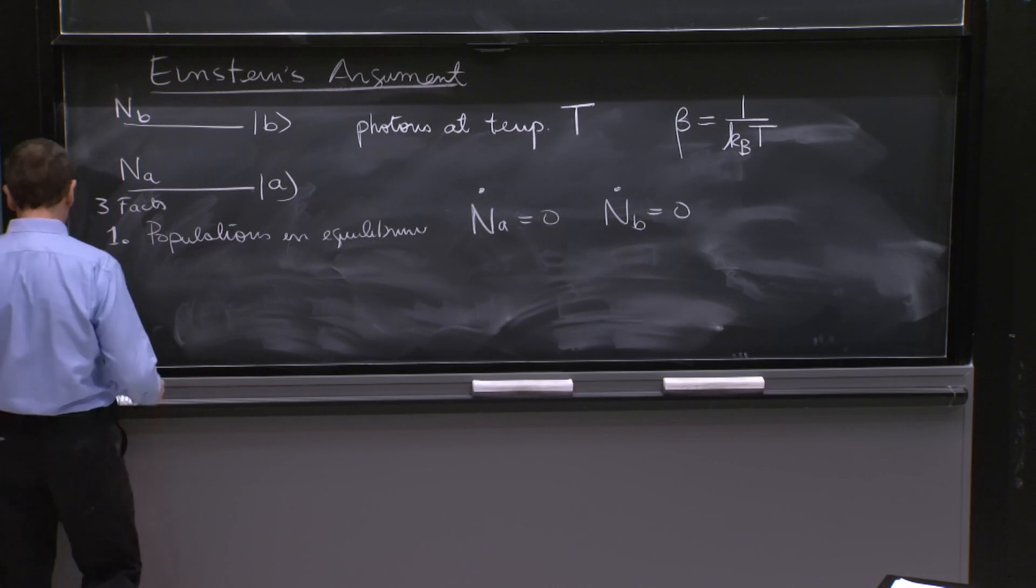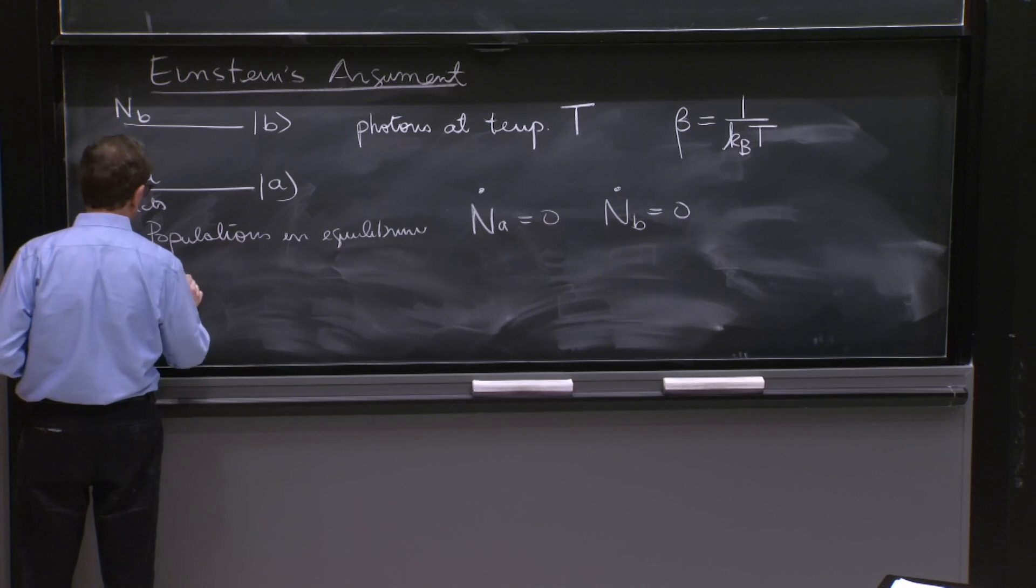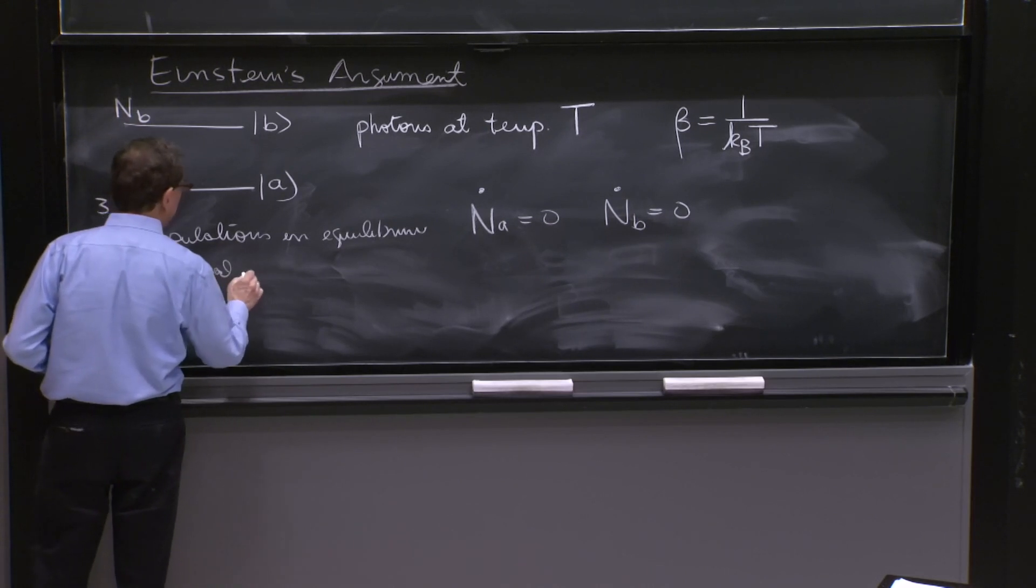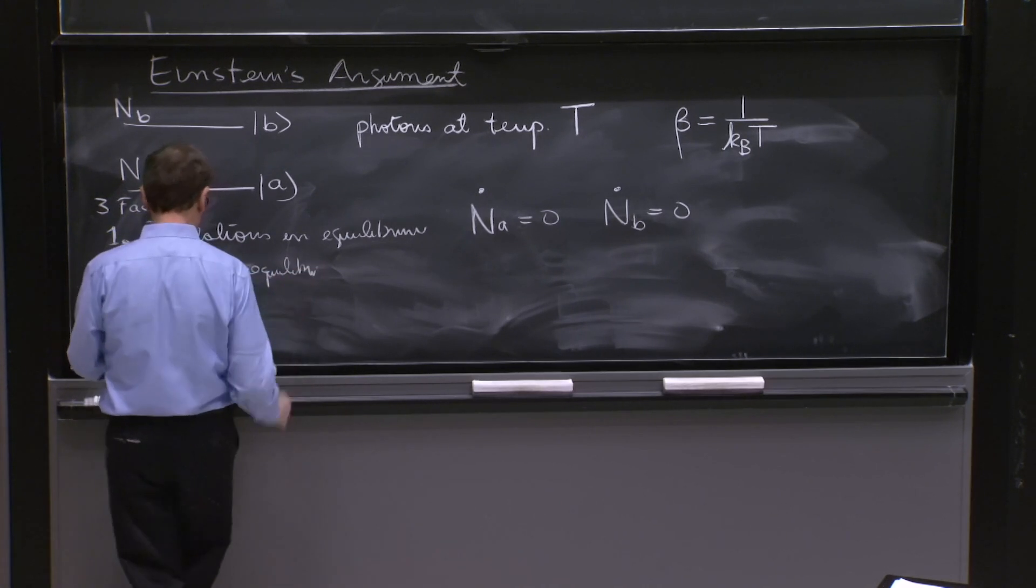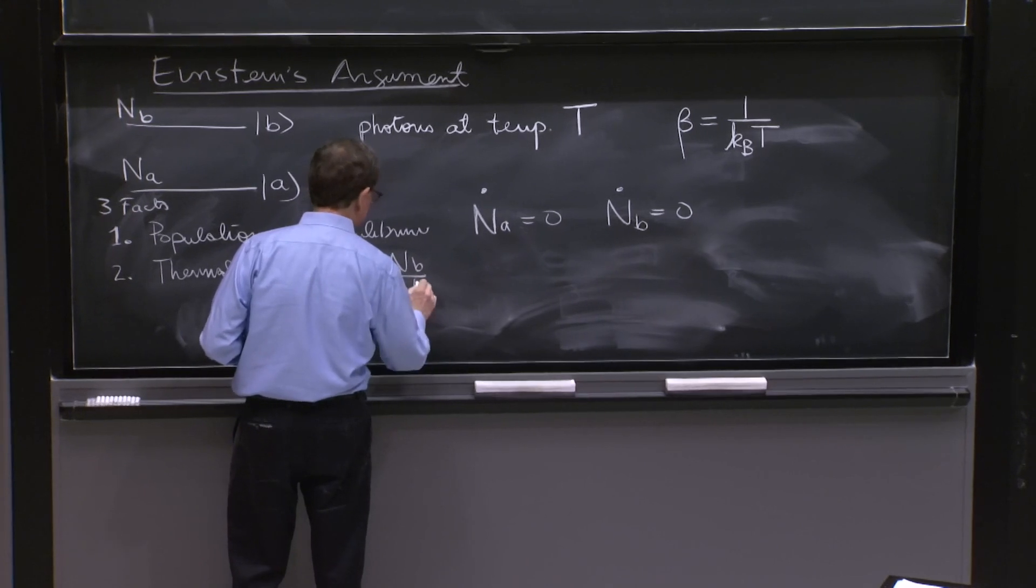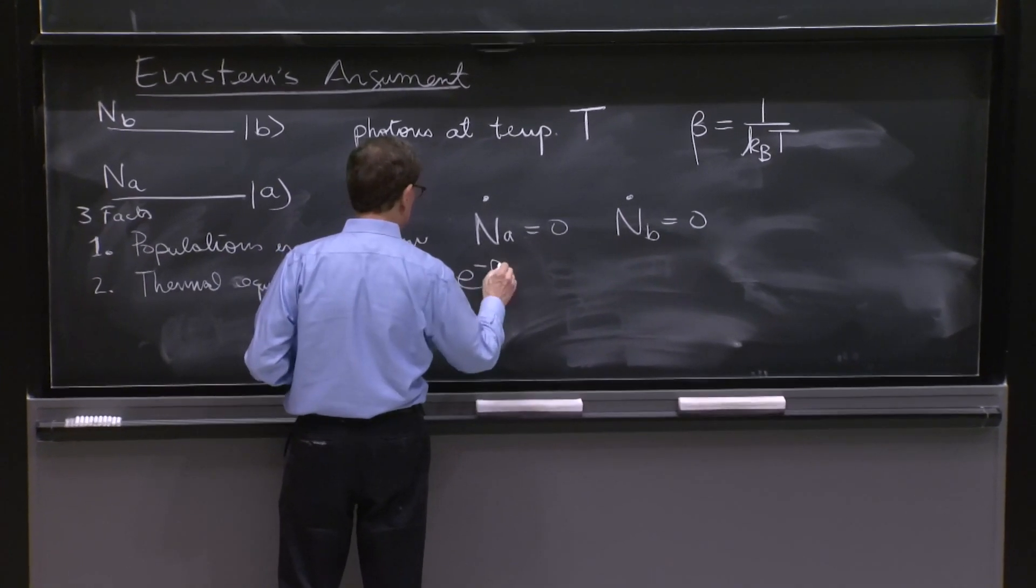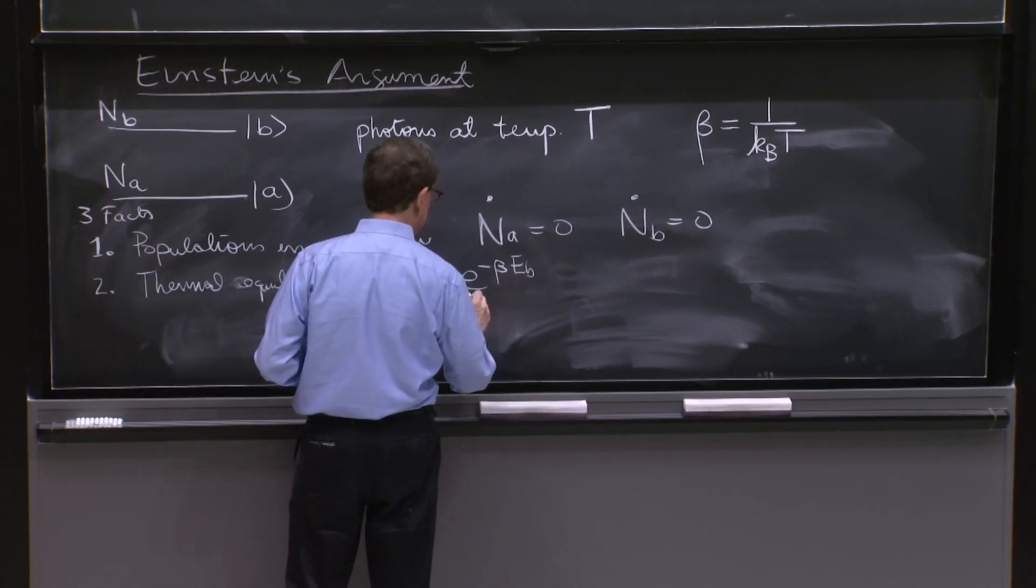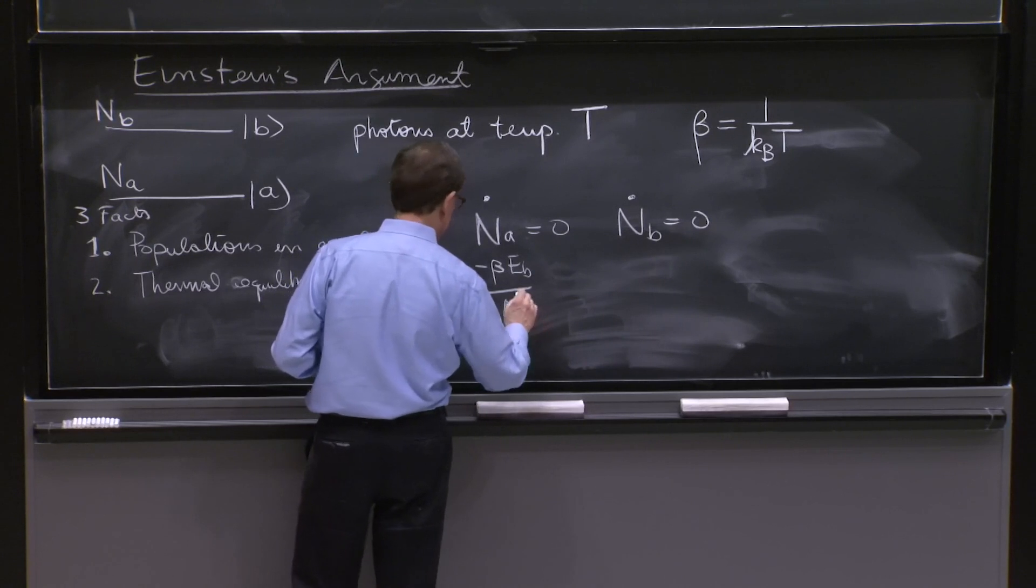The second statement is that the equilibrium is thermodynamical. So it's thermal equilibrium that is Nb over Na, for example, is the Boltzmann factor e to the minus beta Eb over e to the minus beta Ea.